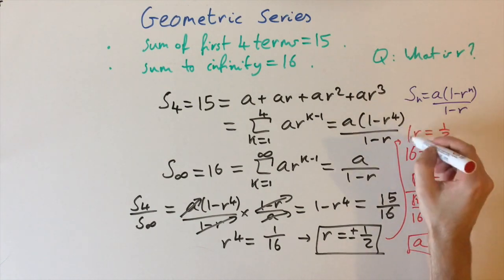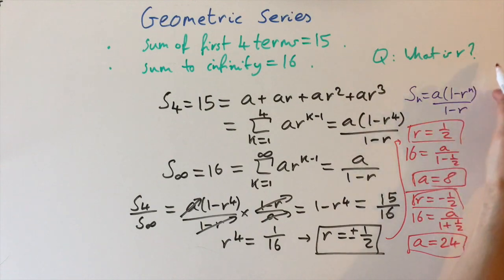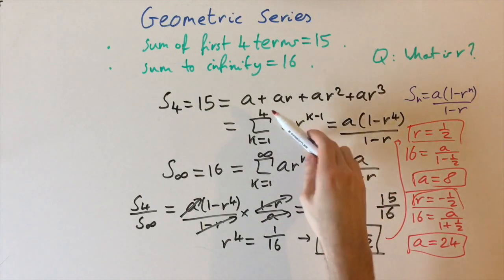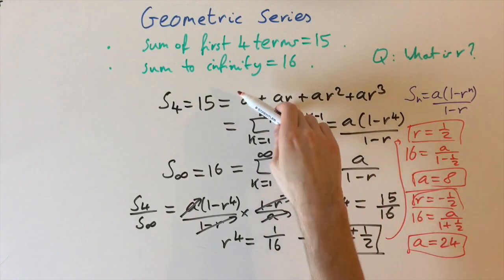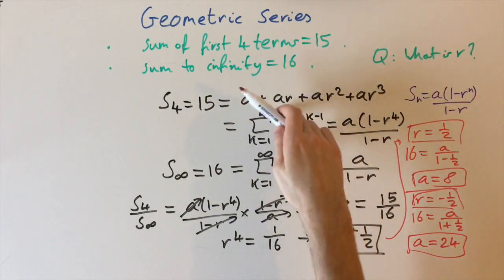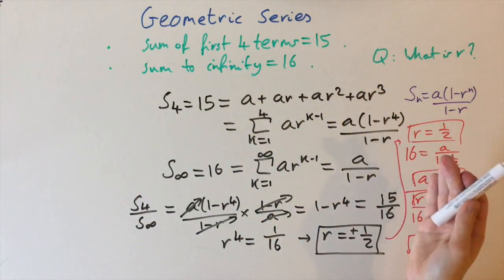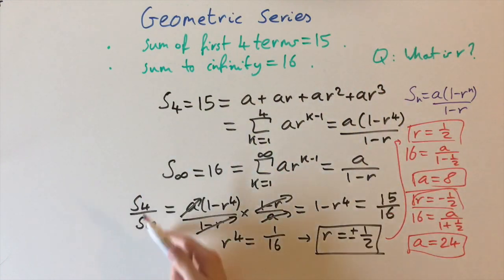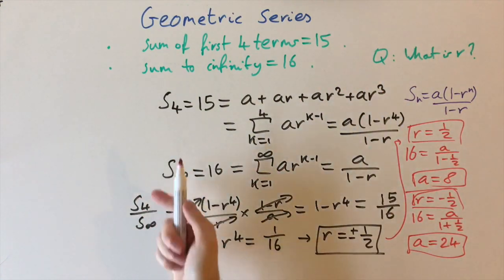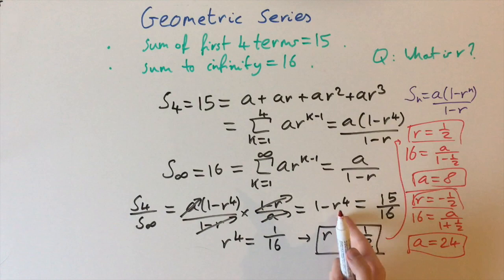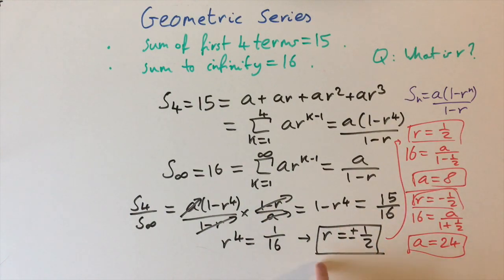The main part of this question was to find the ratio. We wrote the formula for the finite sum S4 and the formula for the infinite sum S∞, then divided one by the other to eliminate a and solve for r. That gives us our complete solution.